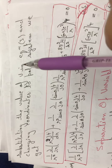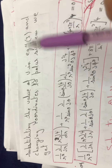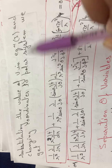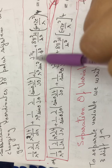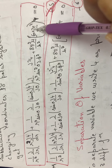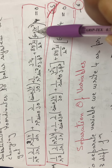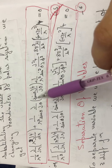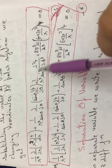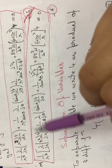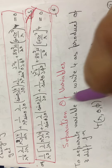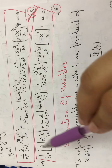Substituting the values of V and changing the coordinates to the polar system, we get the Schrödinger equation in polar form. Here you can see that −V becomes +Ze²/r, and the full conversion of the Laplacian operator into polar coordinates has been shown earlier. The resulting equation is written out here.